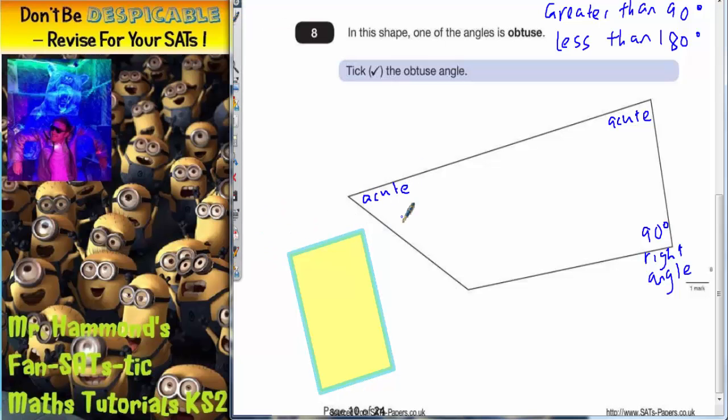Now so far we haven't found anything that's obtuse, so that would lead you to believe by elimination that the only angle left must be obtuse.